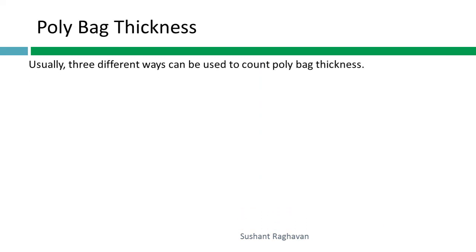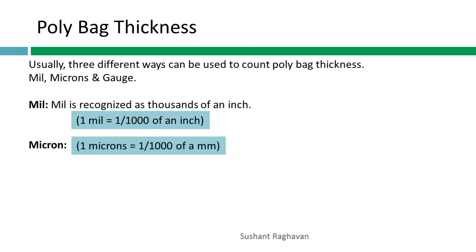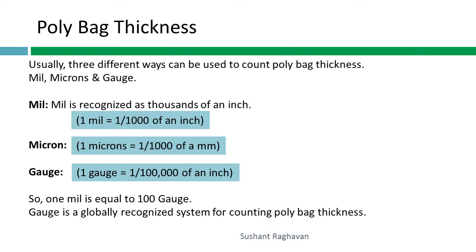There are three different ways to measure poly bag thickness: mill, microns, and gauge. One mill equals 1/1000 of an inch. One micron equals 1/1000 of a millimeter. One gauge equals 1/100,000 of an inch. Therefore, one mill is equal to 100 gauge. Gauge is a globally recognized system for counting poly bag thickness. Conversion: 1 mil = 25 microns = 100 gauge.